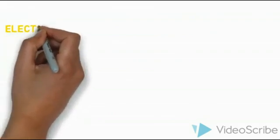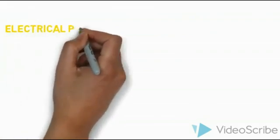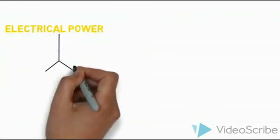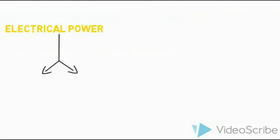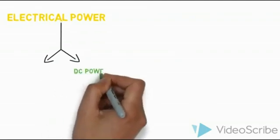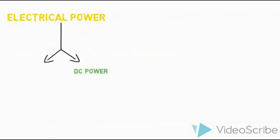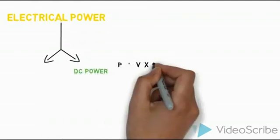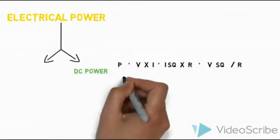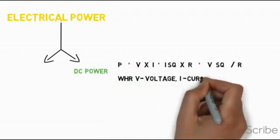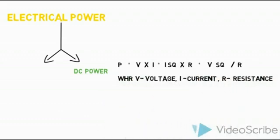For electrical power, there are two types of current. We can calculate the power based on the current. First, DC current. P is equal to V times I. Otherwise, I² times R. Otherwise, V² over R. This is the DC power formula.